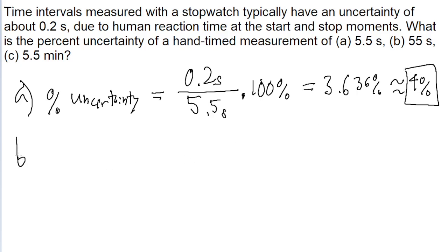For part B, the measurement is 55 seconds. The process is the same as we did in part A. So 0.2 seconds, that's our uncertainty, divided by the measurement of 55 seconds, multiply by 100%, and put it into a calculator.